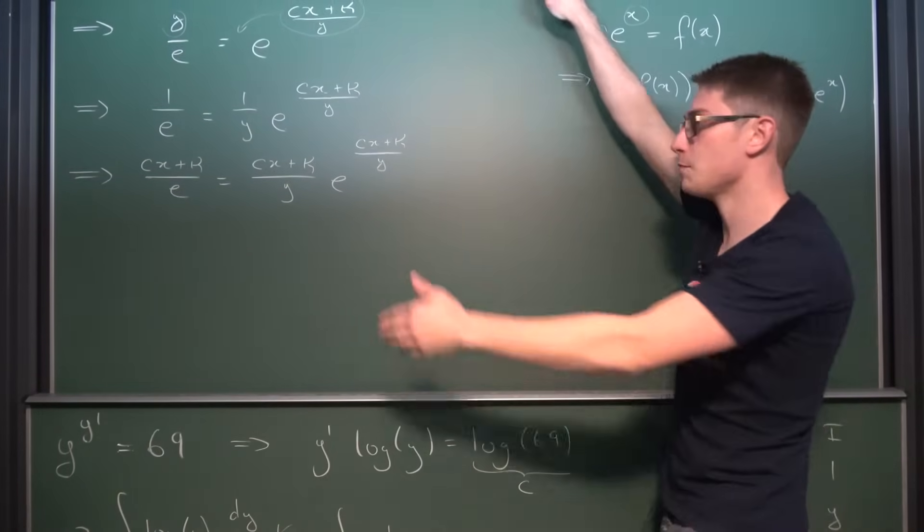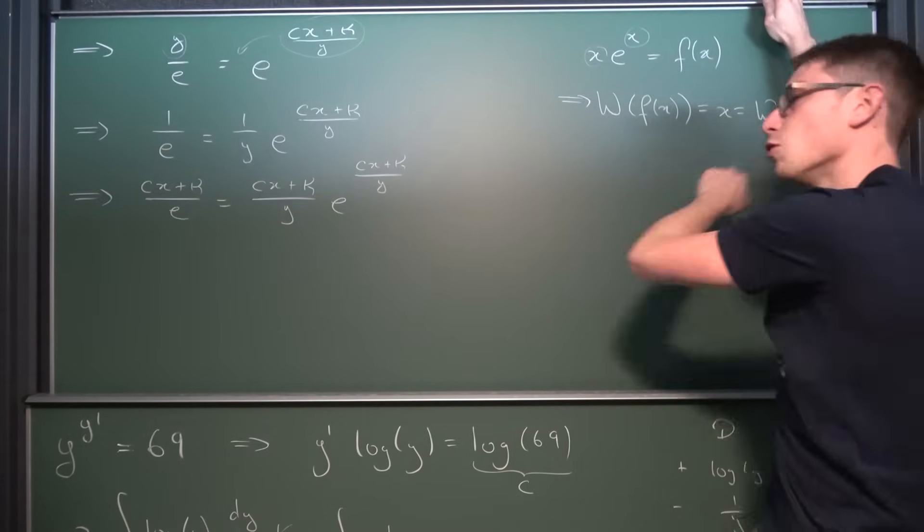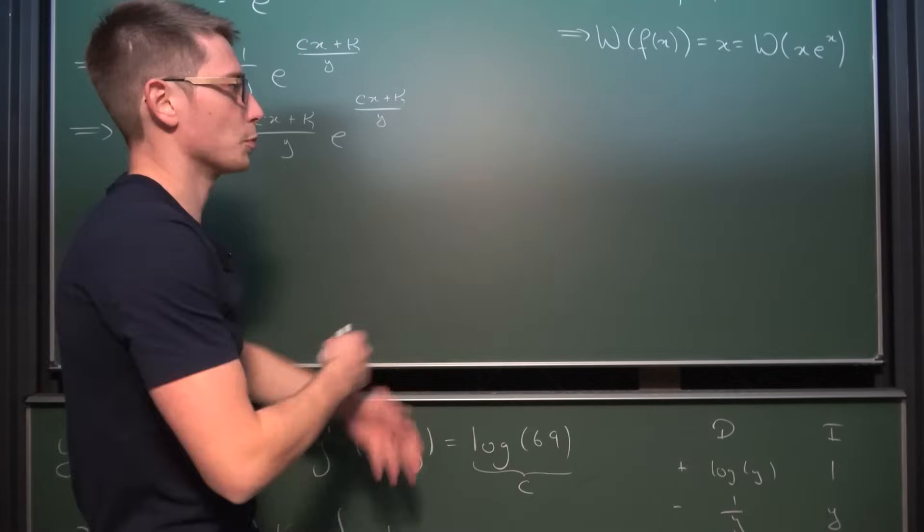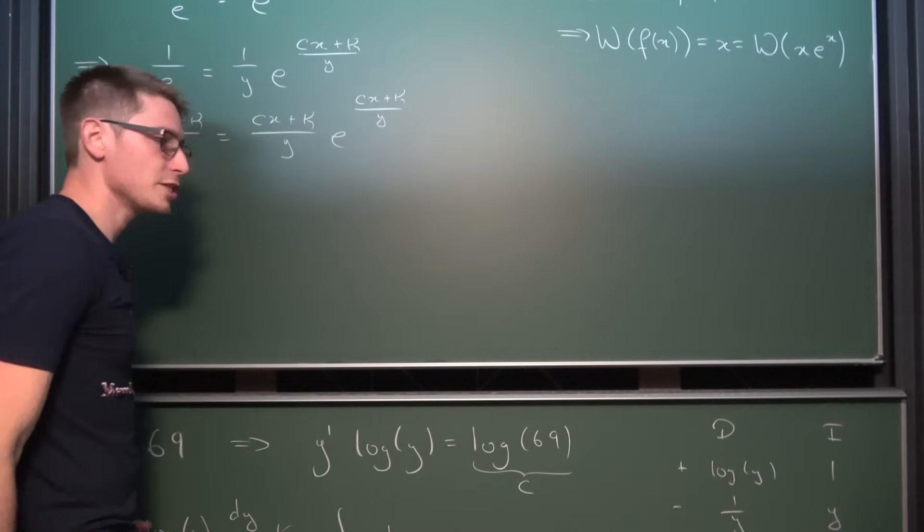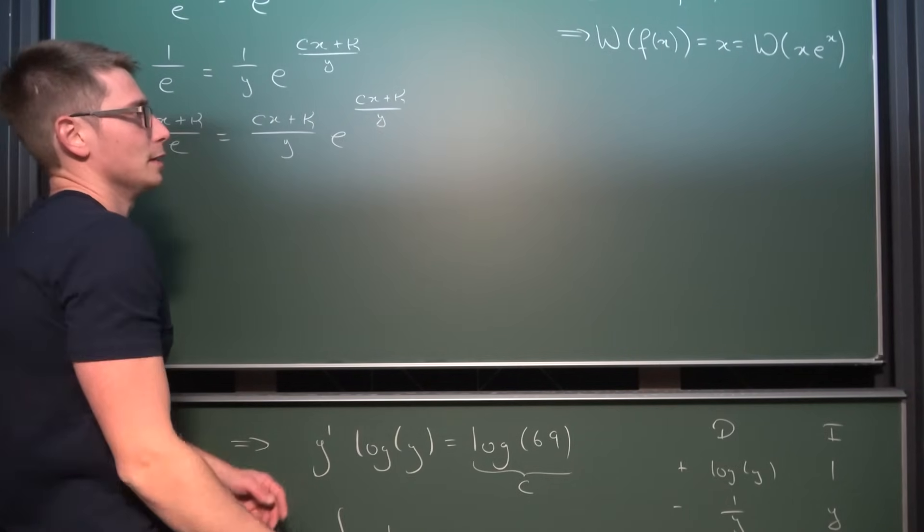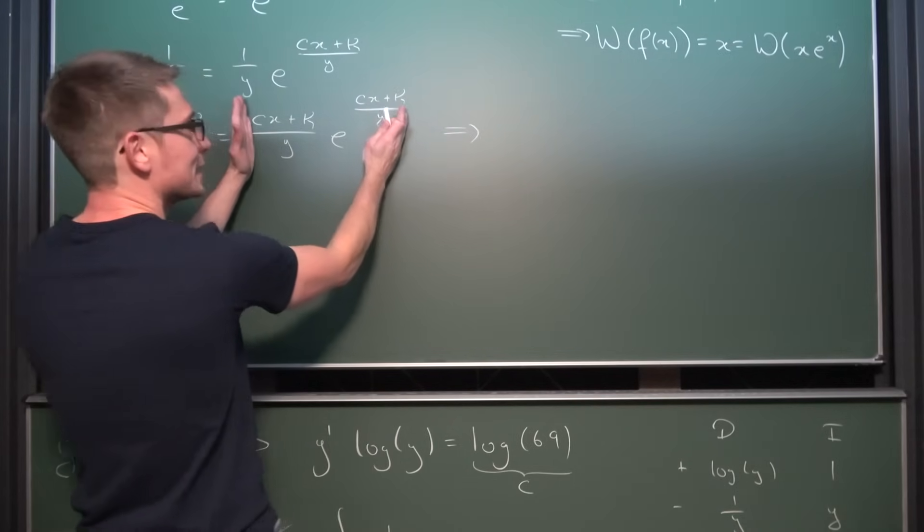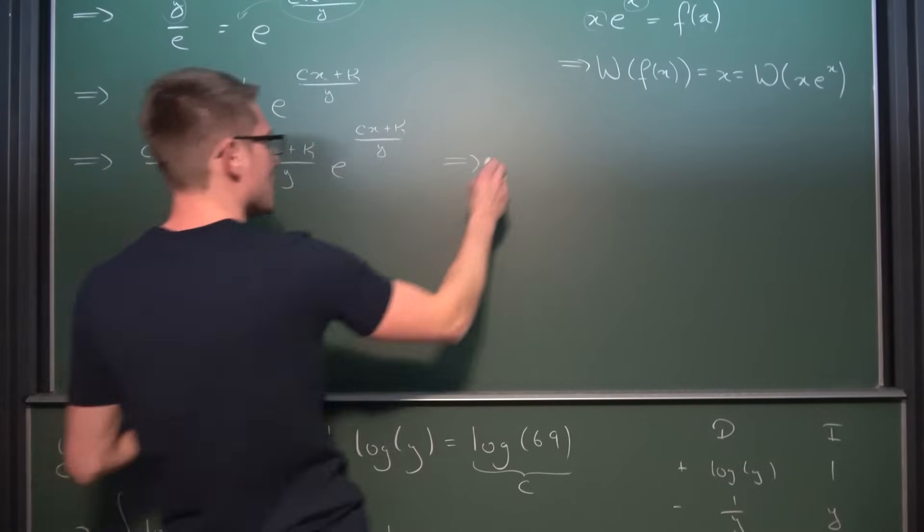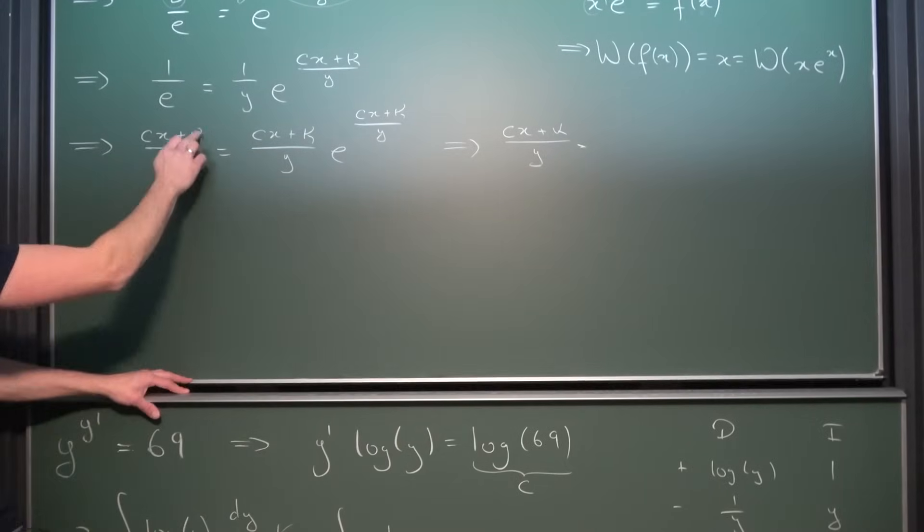And the cool thing is now we got something in the form of x times e to the x. And now we can apply the Lambert W function on both sides. And then we can proceed further by applying the Taylor series to the appropriate branch and the like. But this is not of concern here. We just want to get a solution to the differential equation and the other stuff can be left to the numerical analysis out there. Aka the people that do physics. So applying the Lambert W function on the right hand side gives us the x value that we have here which is nothing other than c times x plus kappa divided by y is equal to the Lambert W function of this thing.